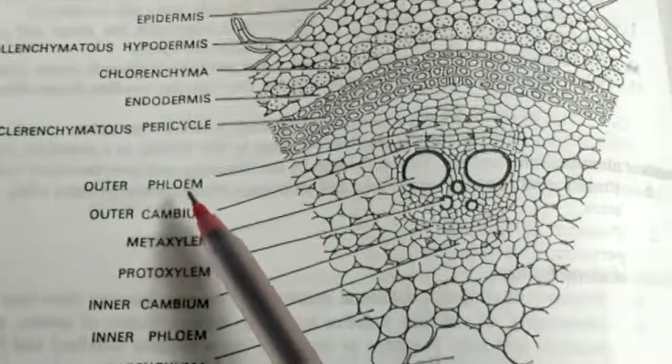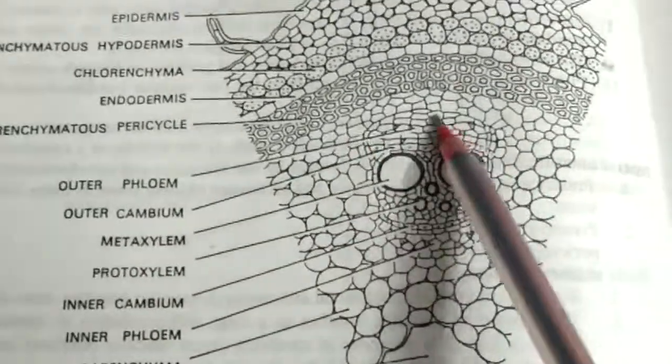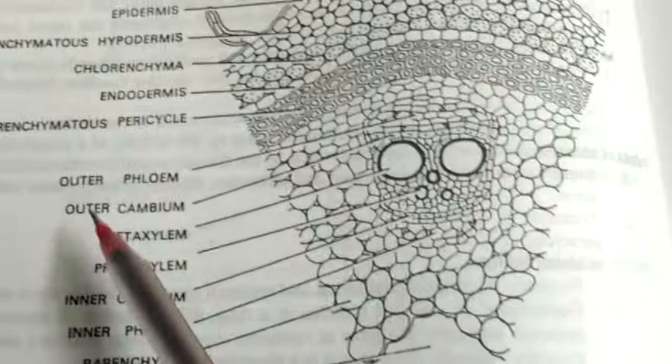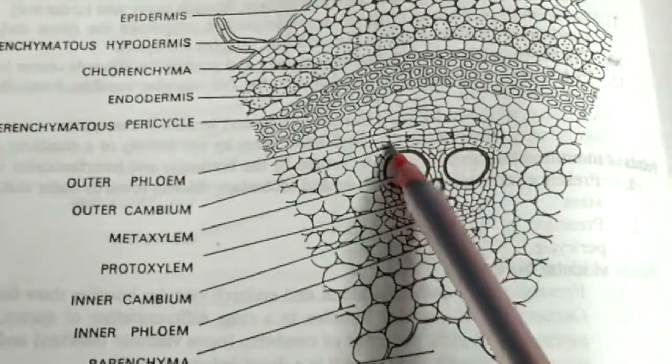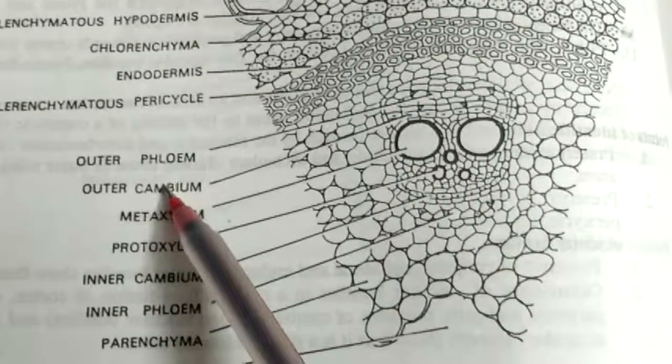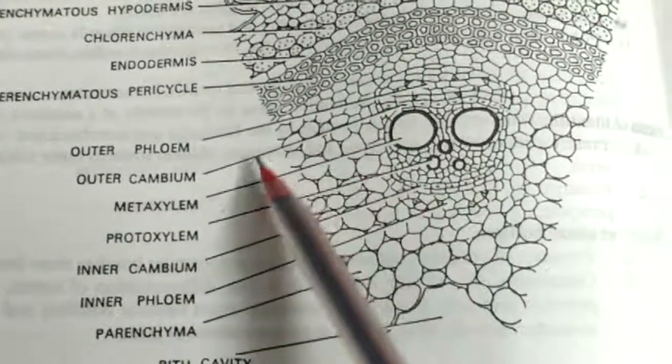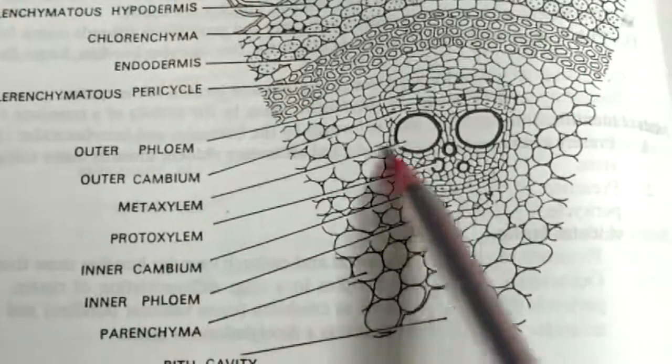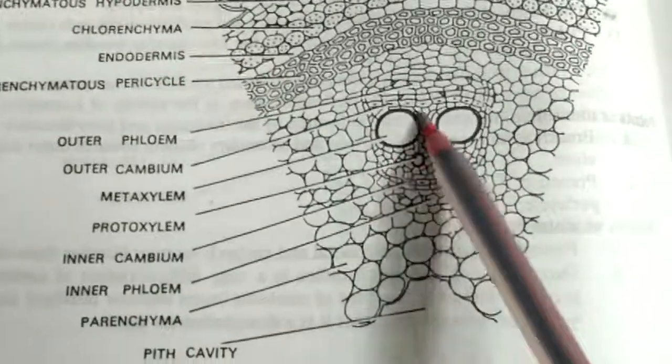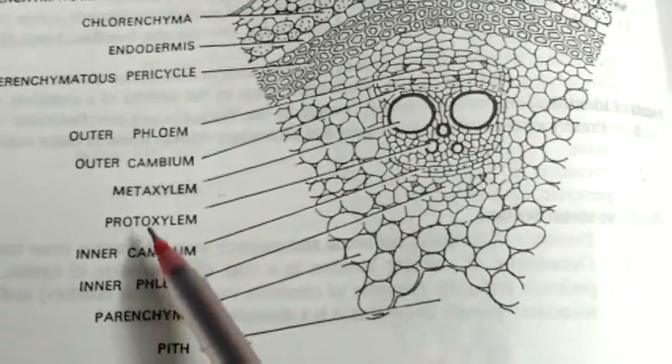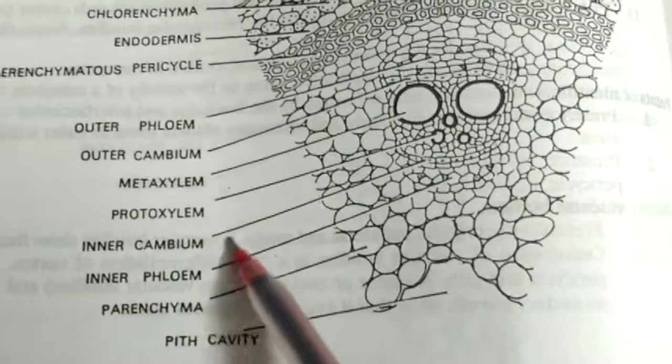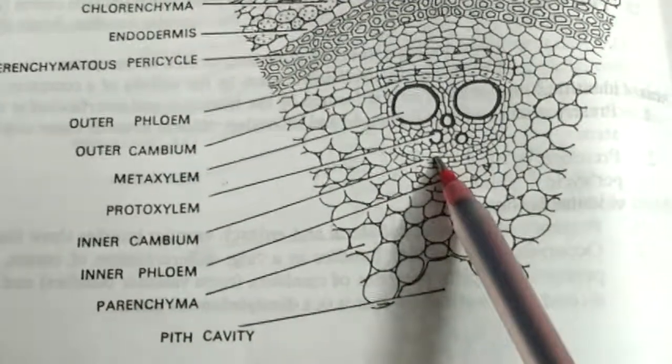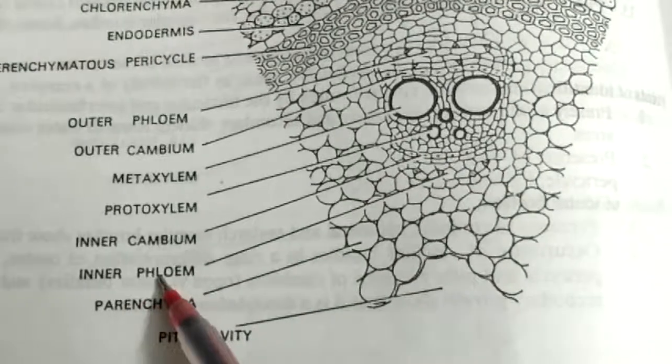This is outer phloem. This is outer cambium. This is metaxylem - big structure, very big. This is protoxylem. Again, an inner cambium is here. This is inner phloem.